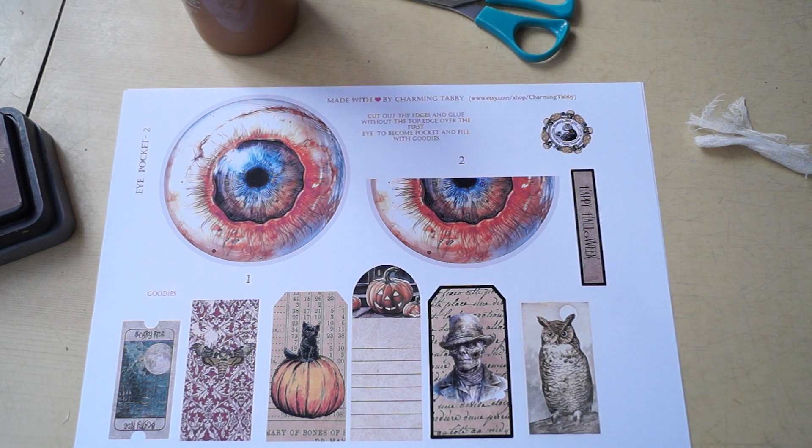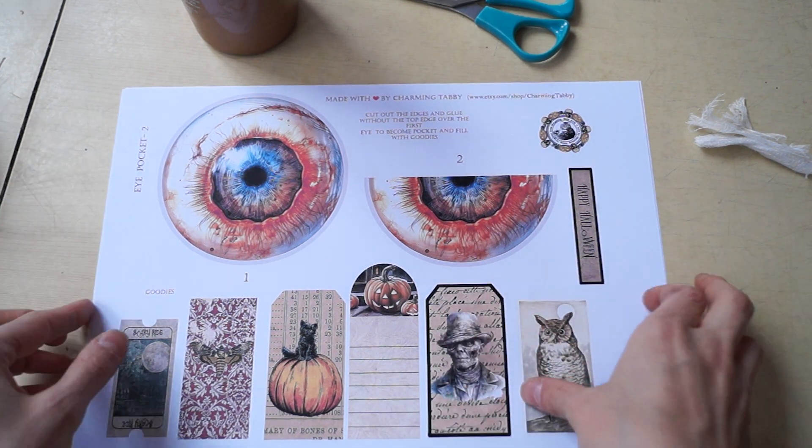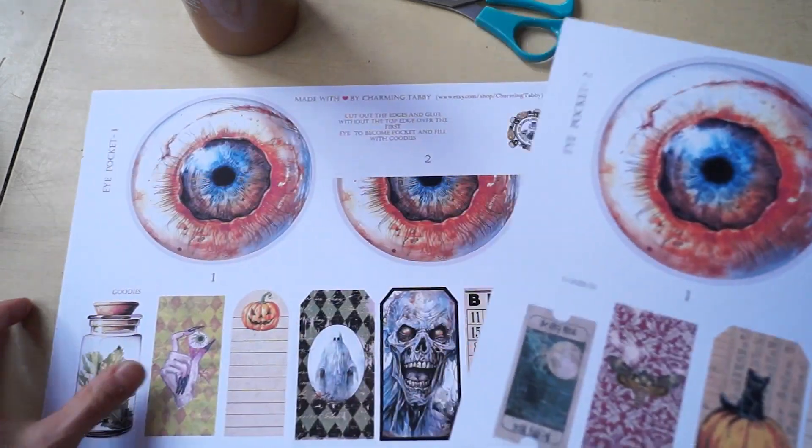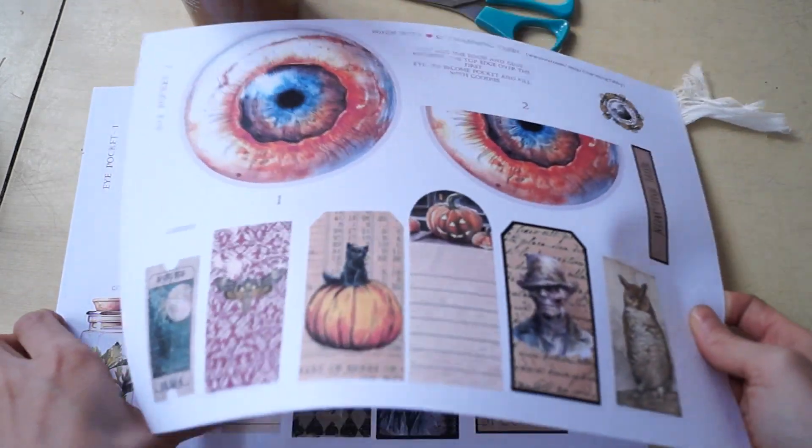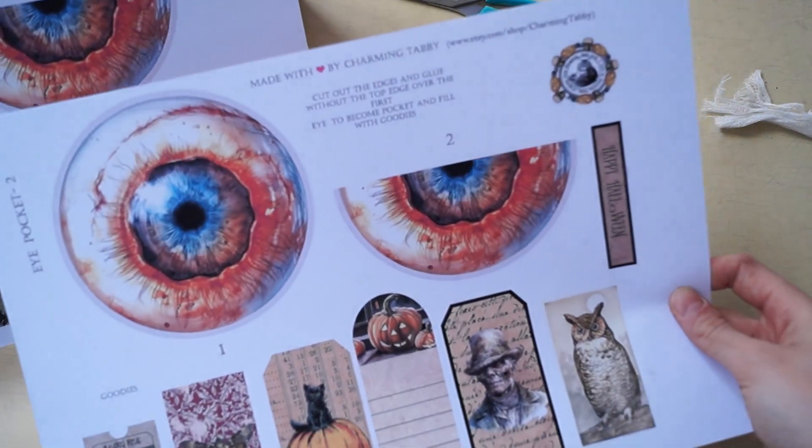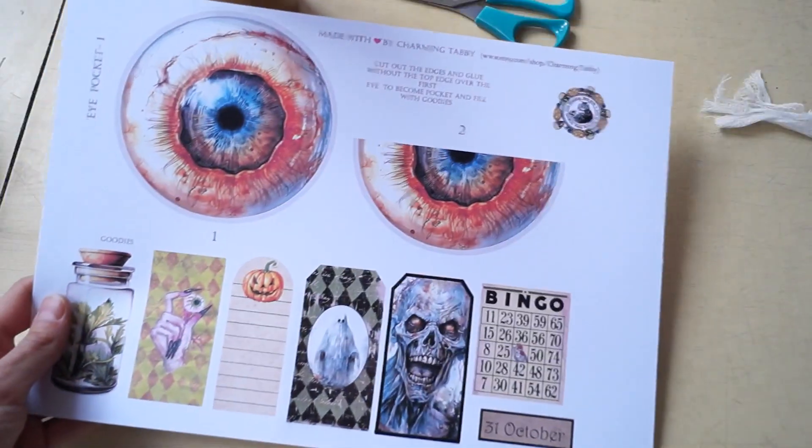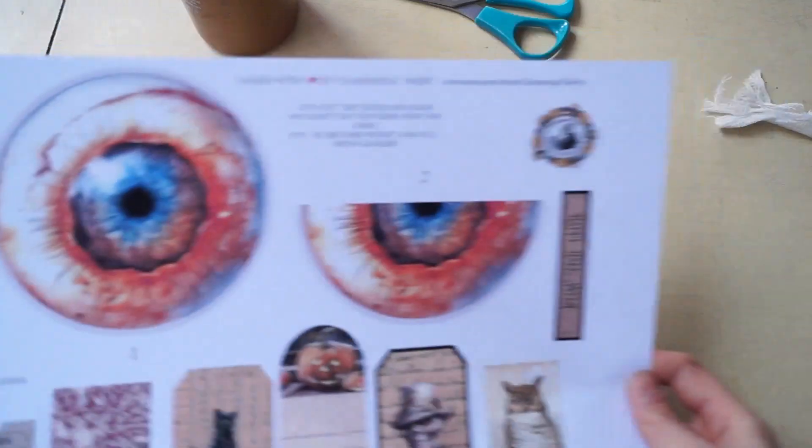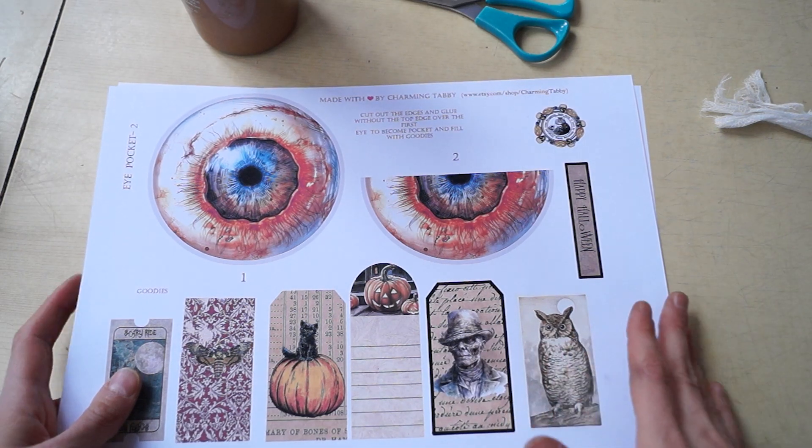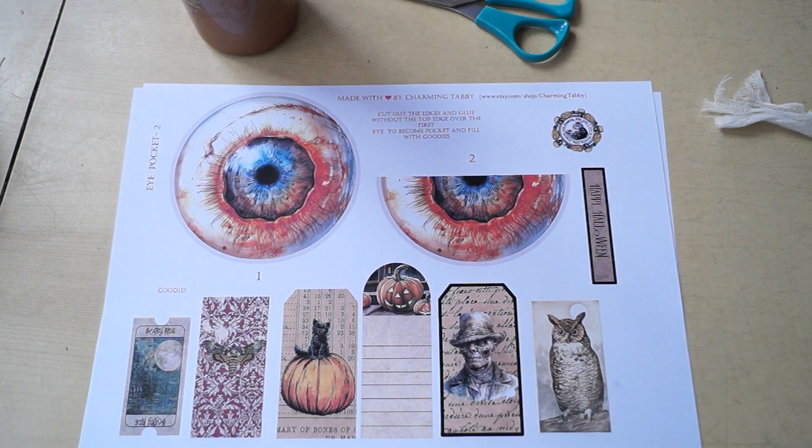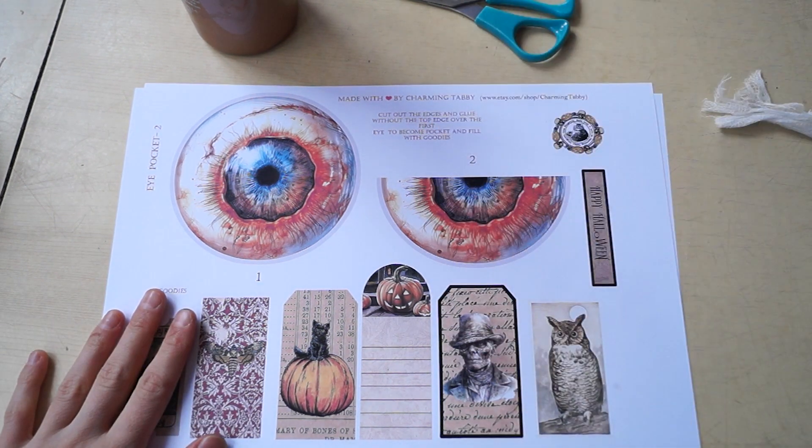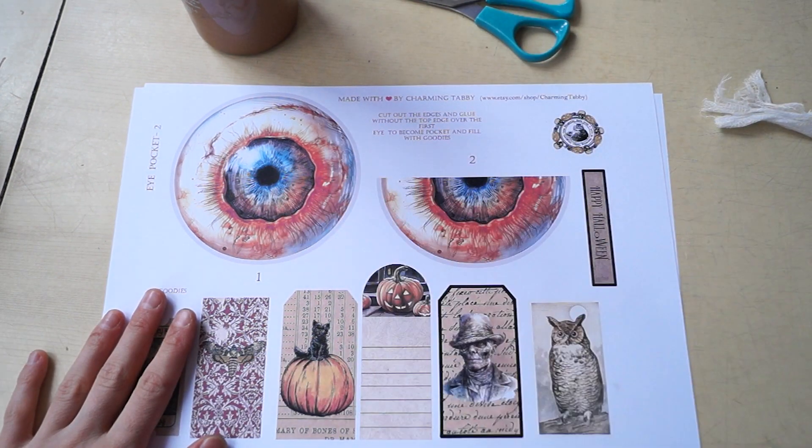When you purchase this pocket, you are going to receive these two eyes actually and the embellishments that are under them. I hope that you enjoy the video and the idea that I'm going to use to decorate those eyes. Let me just cut them out and I'm going to show you how to assemble the pockets.